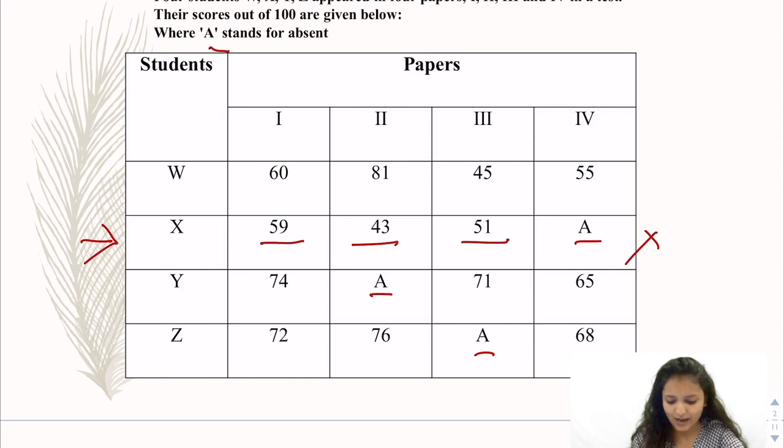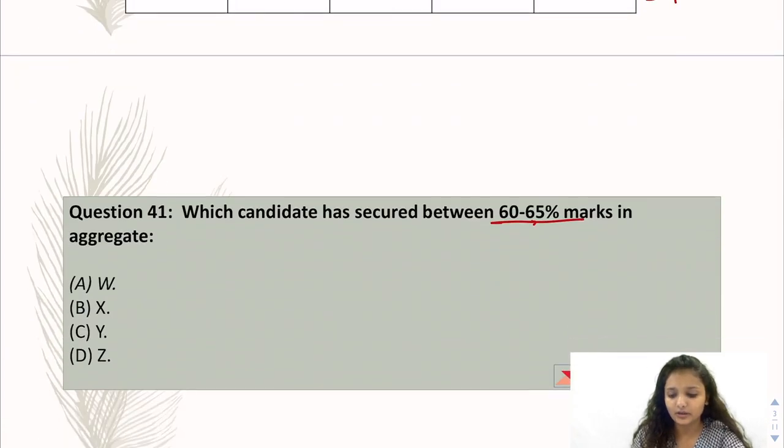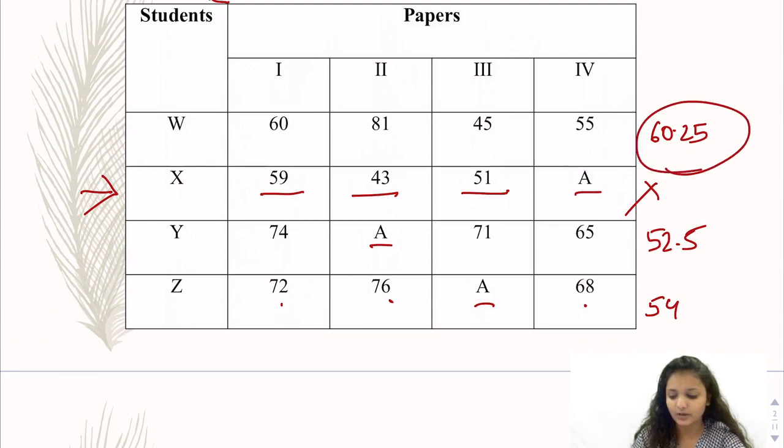Now you have W, Y and Z. So you will see that here is 60.25, here is 52.5, here is 54. Now the aggregate of four papers is 72, 76 plus 68 divided by 4. Why four? Because you calculate the percentage, so it shouldn't matter that the child has a paper attempt or not. The answer will be W because it is 60.25%.